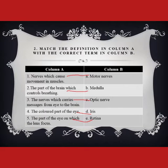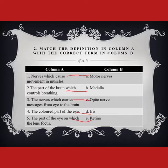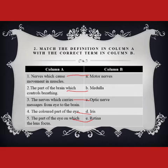Question number two is match the definition in column A with the correct term in column B. First definition: nerves which cause movement in muscles. We have two types of nerves — sensory nerve and motor nerve. Sensory nerves detect stimuli and bring signals to the brain, while motor nerves send responses that create movement. So motor nerve is the answer. Next: the part of the brain which controls breathing. Breathing is an involuntary reaction and the medulla controls involuntary reactions, so the answer is medulla.